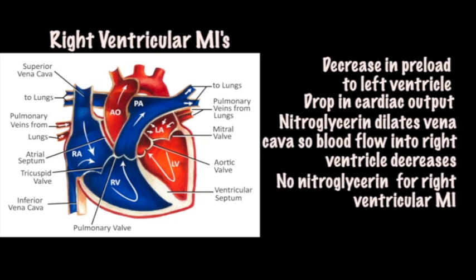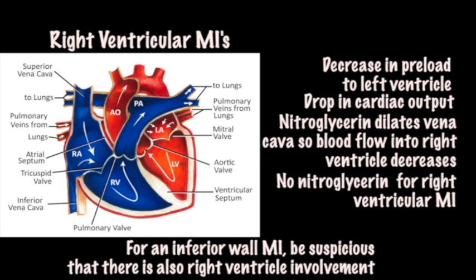This is why patients with right ventricular MIs cannot be given nitroglycerin. In fact, sometimes they need to be given IV fluids. So it is very important to identify a patient with a right ventricular MI so you know to avoid giving nitroglycerin. Because the same blood vessel usually supplies the inferior wall and the right ventricle, whenever we see an inferior wall MI, we have to be suspicious that there is also right ventricular involvement.